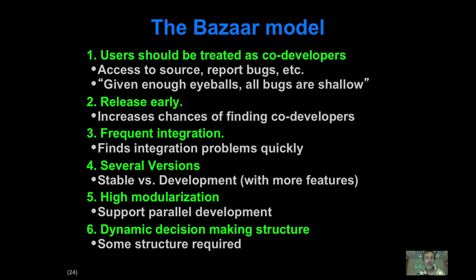In the bazaar style, users should be co-developers. They should have access to the source and be able to report bugs. There's the famous quote: given enough eyeballs, all bugs are shallow — meaning if enough people look at the problems, somebody will quickly come up with an approach to solving it. Don't wait until something is fully implemented before you release it; integrate quickly. You can have lots of different versions, and try to modularize as much as possible to support parallel development.